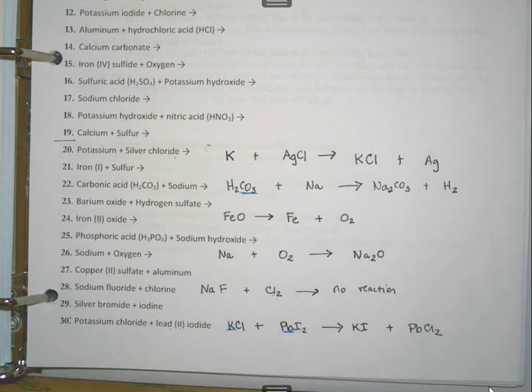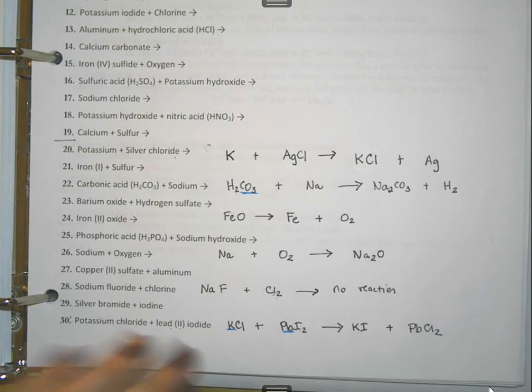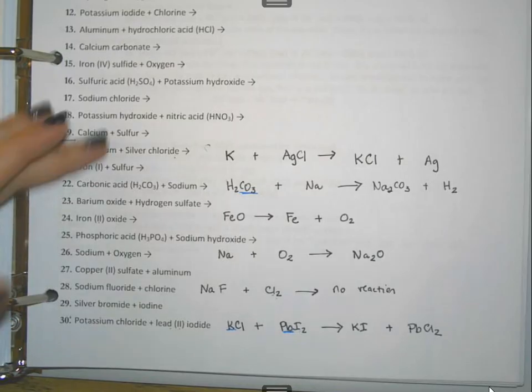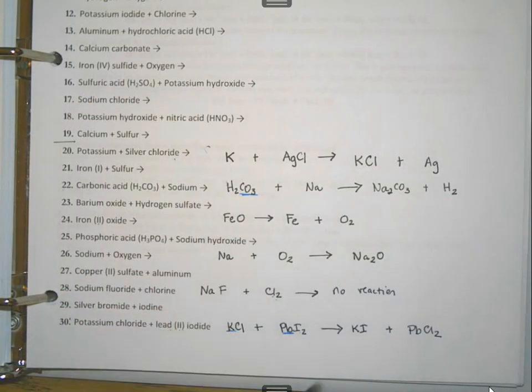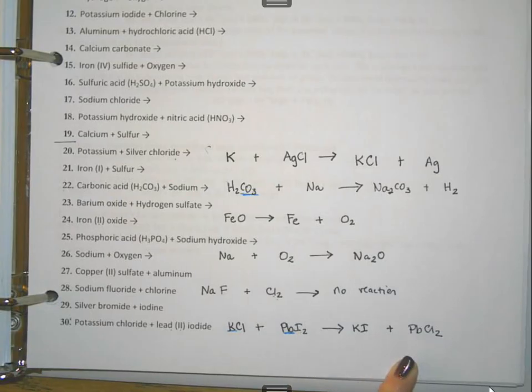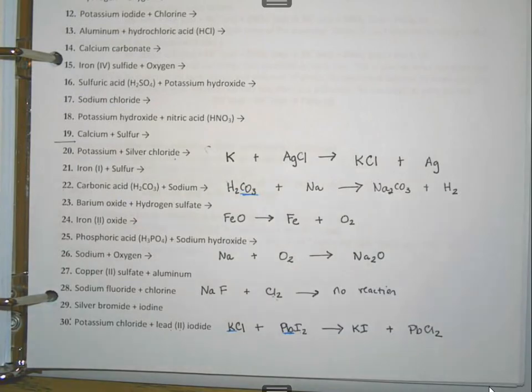Okay, if you were watching in the previous video before this, we worked on turning the words into the reactants, and then we used our reaction types to predict the products of these chemical equations. What I'm going to work on next for this video is deciding the states of matter for each of these things.